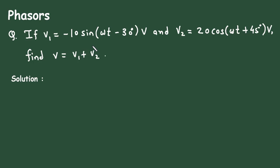In this video we will see an example on phasors. If V1 is equal to minus 10 sin(ωt − 30°) volts and V2 is equal to 20 cos(ωt + 45°) volts, we have to find their addition, that is V = V1 + V2.